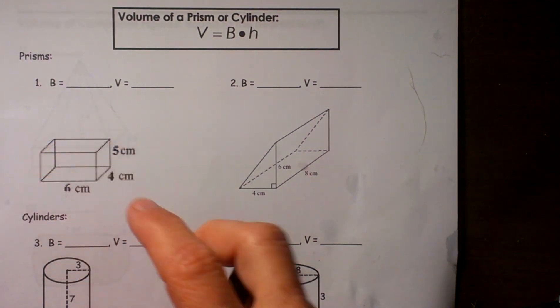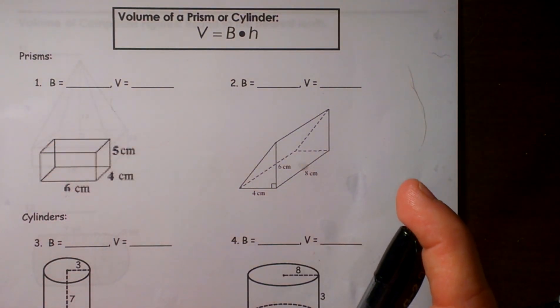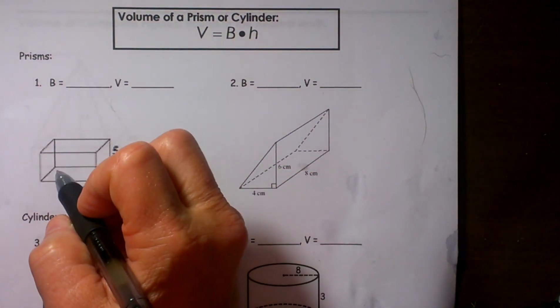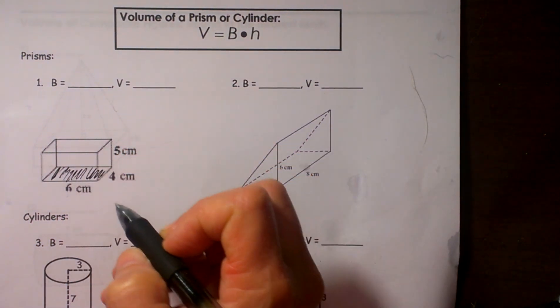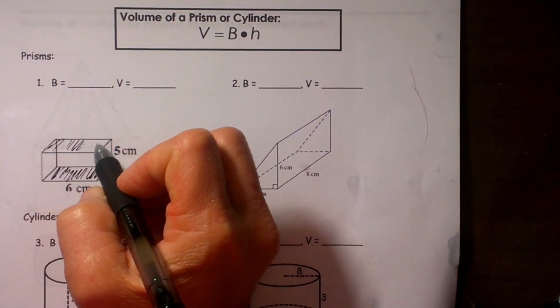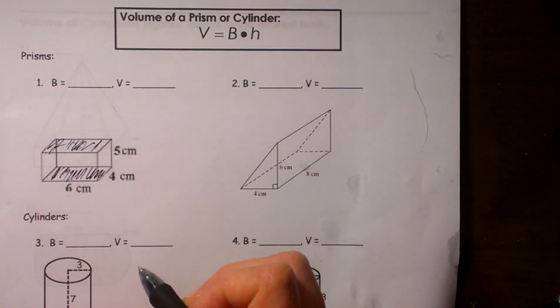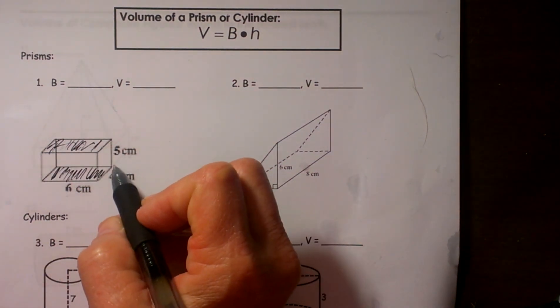So what you need to do is you need to look at your prism and decide what the base is. I am going to shade my base so I can see it. So there is a base and the other base has to be parallel to it. So there are my two bases. So they are rectangles.